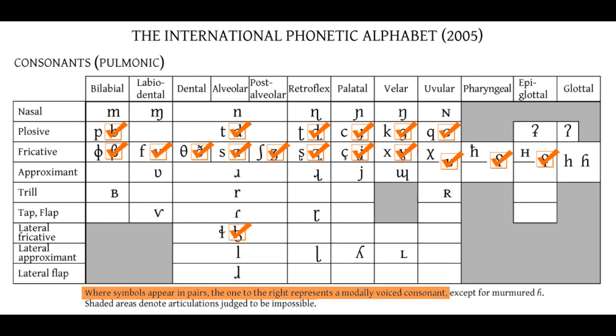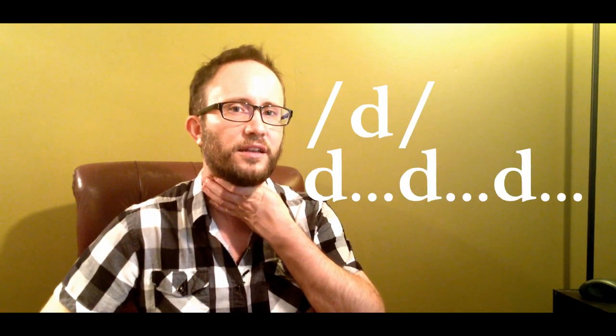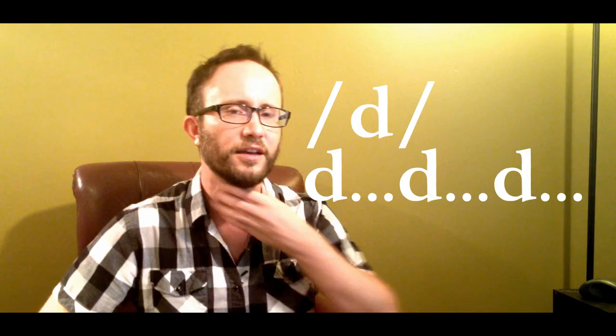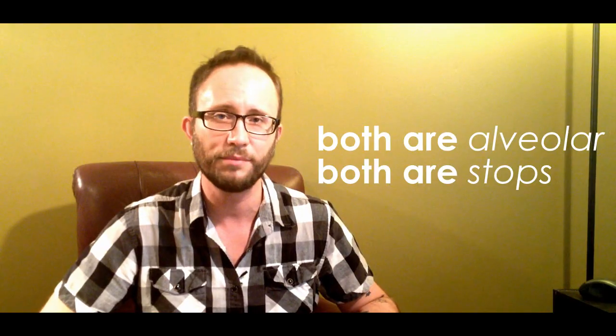When you look at the cells in the IPA chart, whenever you see two sounds together, the one on the left represents the voiceless version and the one on the right represents the voiced version. Looking at T and D — you can feel that buzzing with D that you can't feel with T. Otherwise everything is exactly the same: the tongue's in the same position, being produced the same way. The only difference between T and D is whether or not the vocal folds are vibrating — and that's called voicing.